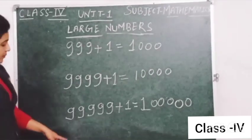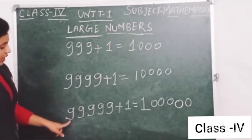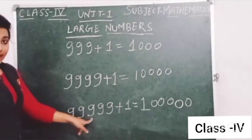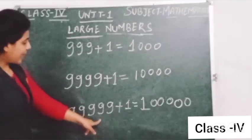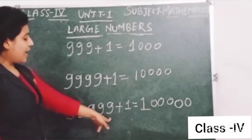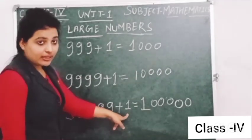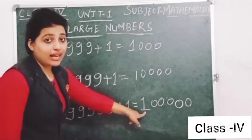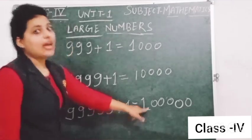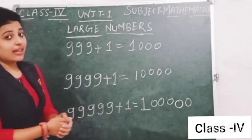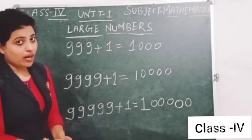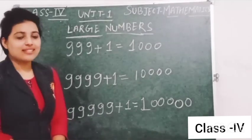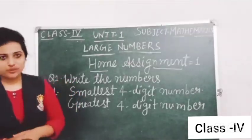Now look here: we have 99,999 and we are adding 1 to it, so we get 1,00,000, and 1,00,000 is our 6-digit smallest number.